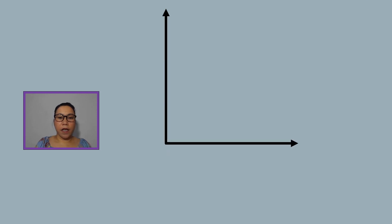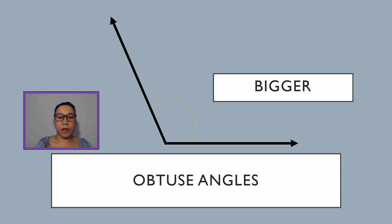On the other hand, if I move the other ray of a right angle counterclockwise a little bit, they are not perpendicular anymore. But we see an angle which is a little bigger than the right angle. Any angles that are bigger than a right angle, we call obtuse angles.